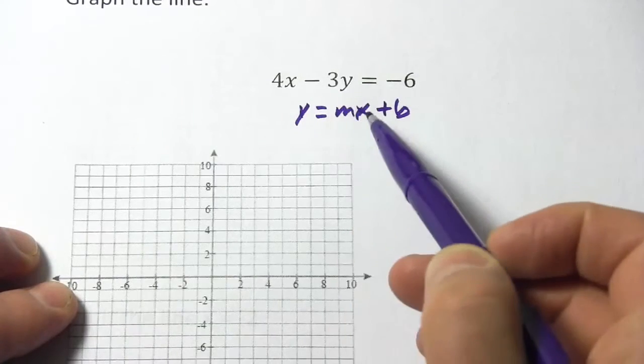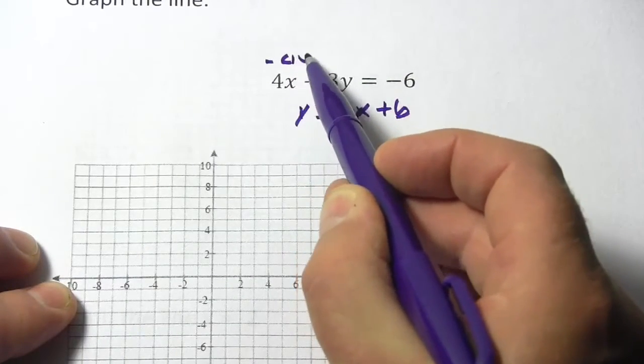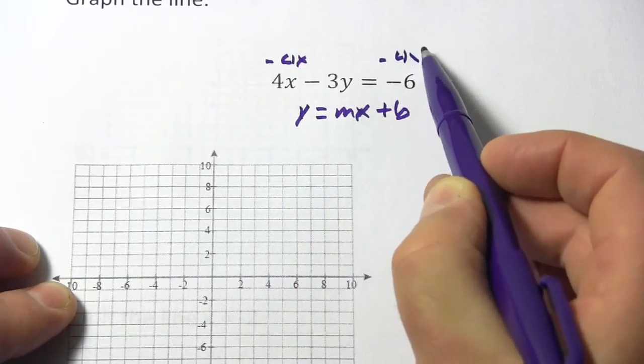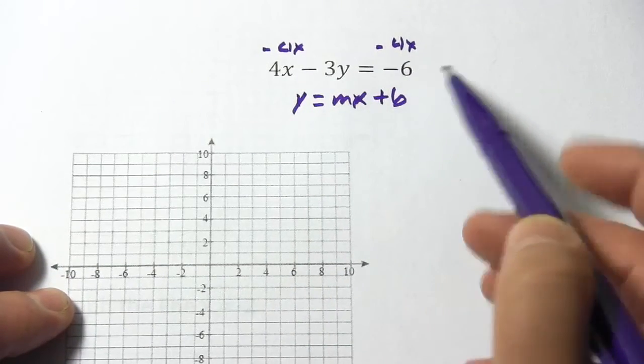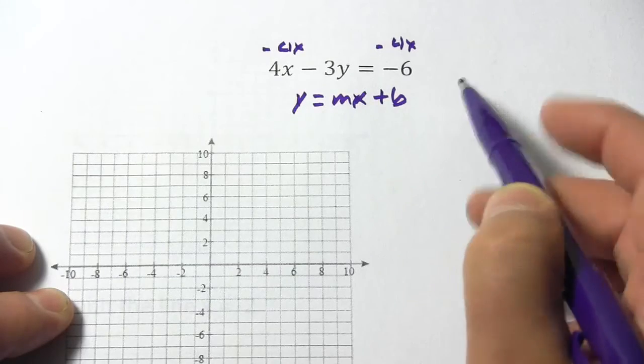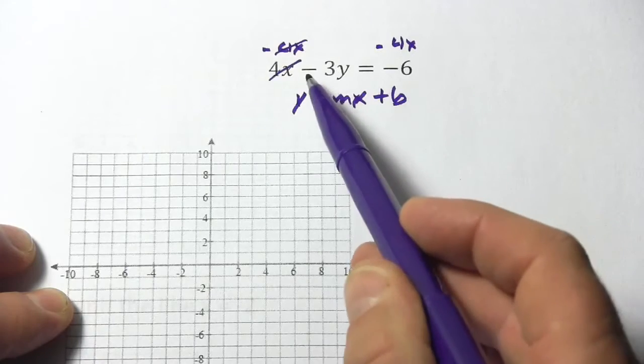The way you do that here is you really just solve for y. So I would start by subtracting 4x from both sides. And then I'm going to write that over here, the negative 4x before the negative 6, just because that's closer to the slope-intercept form.